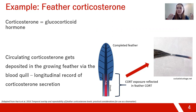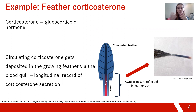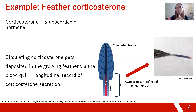As the feather grows, those hormones in the blood quill get deposited into it. When the feather is done growing, the blood supply will recede, and if you sample that feather, you are essentially left with a longitudinal record of circulating corticosterone for that entire period of feather growth. This can be a really long-term measure because feathers grow for periods of days to weeks — much more longitudinal than more acute measures.